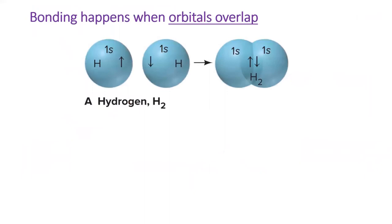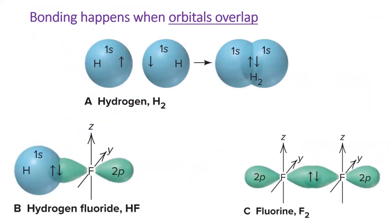Usually, both atoms contribute one electron to a covalent bond. Then, when the bond forms, there are two paired electrons that make the bond, such as in the hydrogen-hydrogen bond shown here. Overlap of any two orbitals can create a bond, as we see for hydrogen and fluorine below.